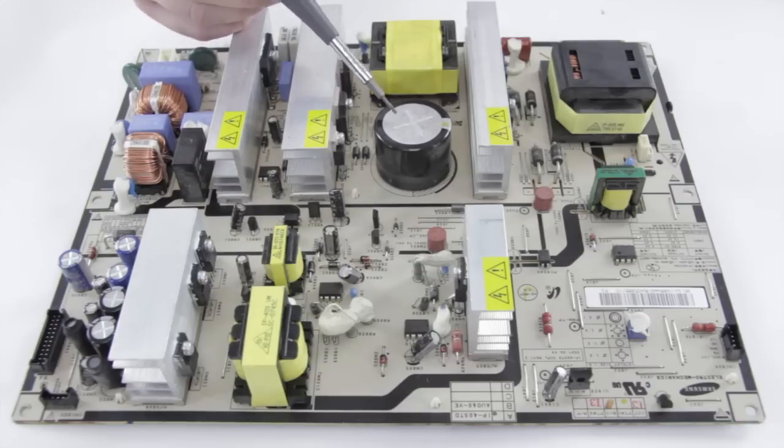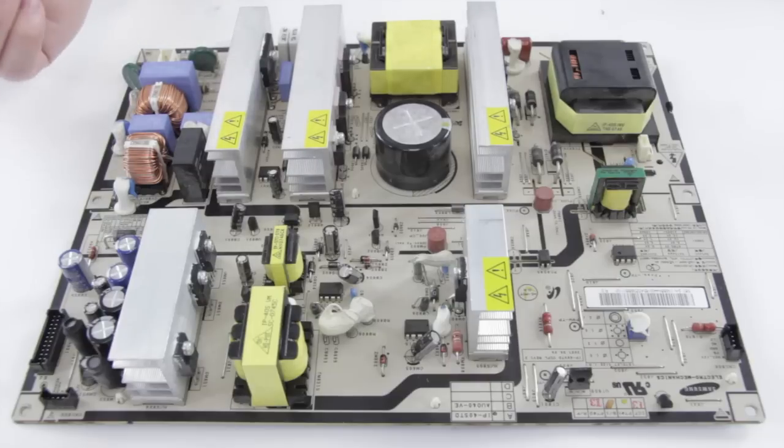In order to make sure it's discharged, there's a few different ways we can do it. First, we can unplug the TV and leave it for 24 hours, but when you want to work on a TV you're using, that's not quite so easy.